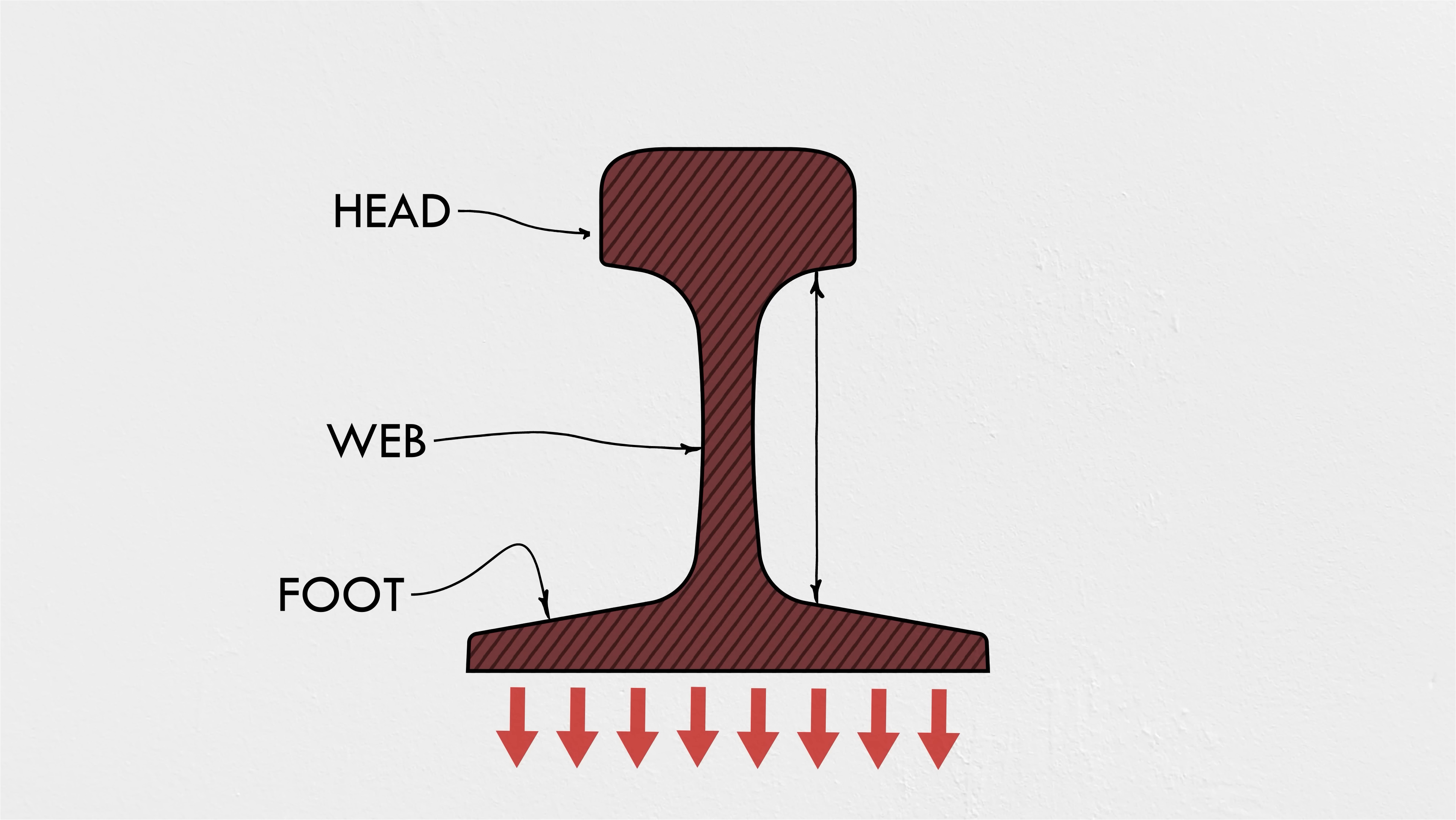The head of the rail is where the action happens. This thick, rounded section of steel takes an awful lot of abuse over its life and thus experiences the bulk of the wear. An old rail section, especially on the high side of a curve, looks remarkably different than a newly forged rail. Here's why.